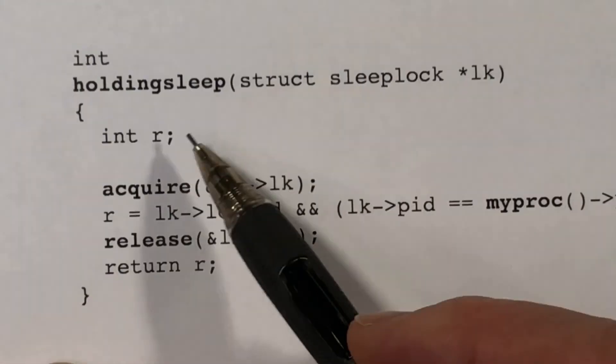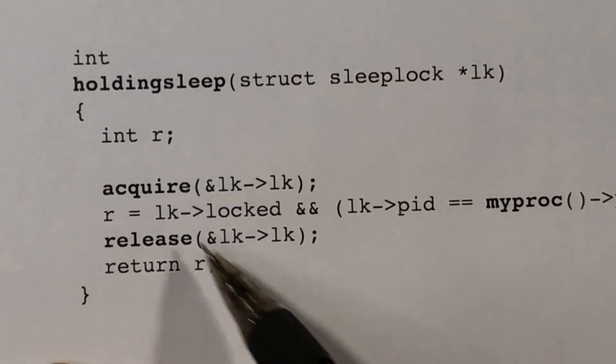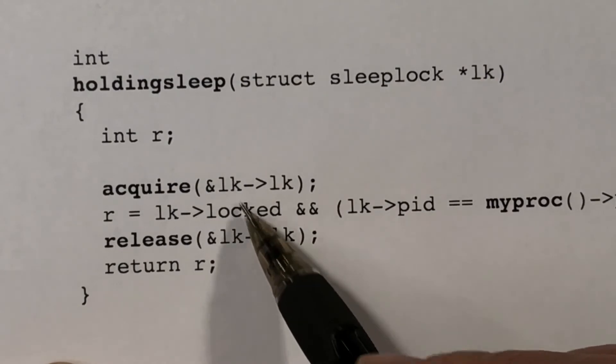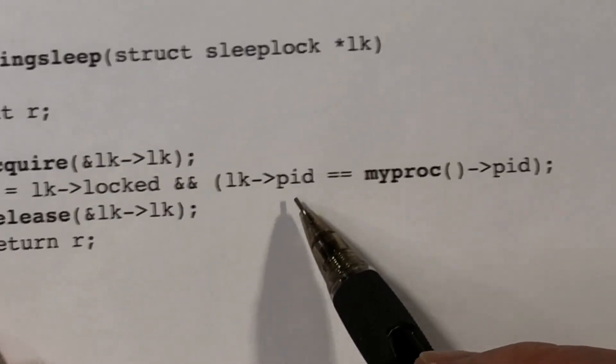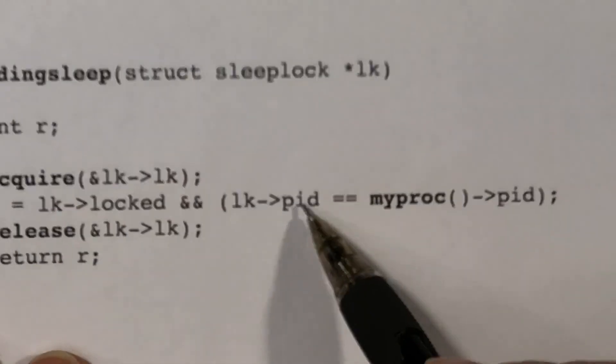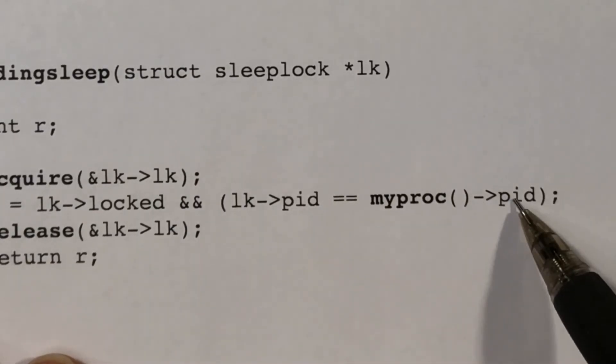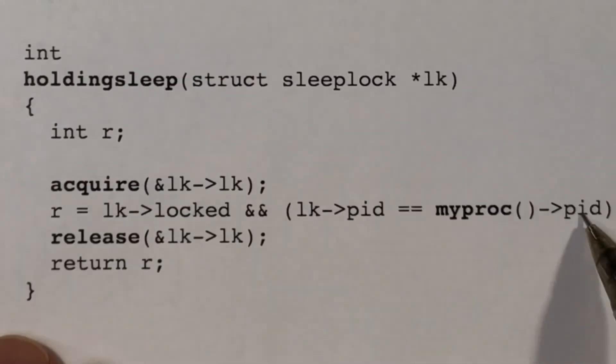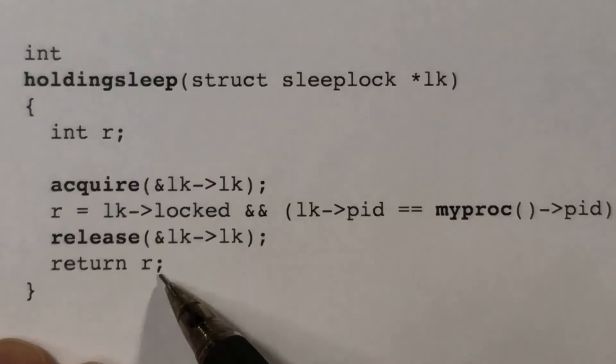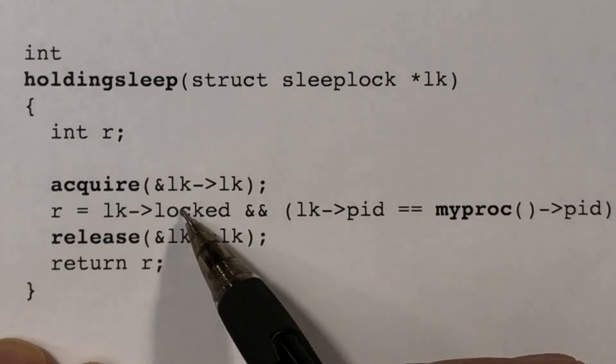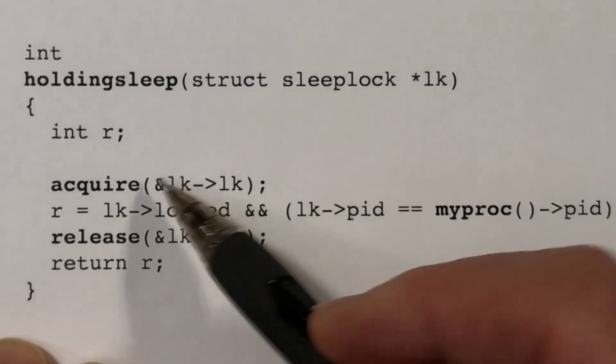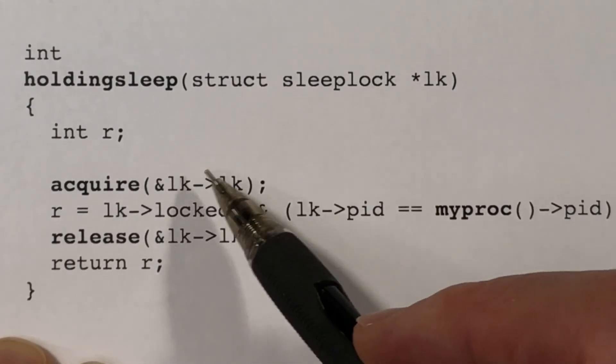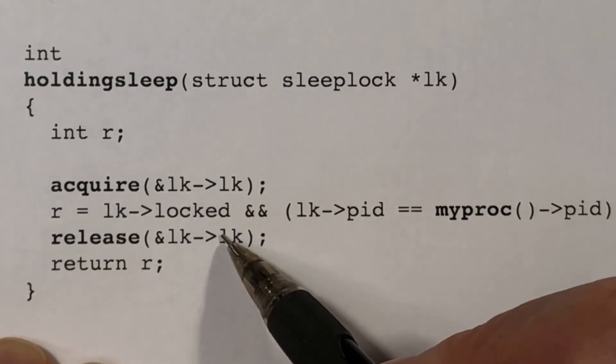The holding sleep function is pretty straightforward. We just ask whether the lock is currently held, and whether the process that is holding the lock, the process ID here, is equal to this current thread's process ID, and return that as a boolean. But of course, since we're accessing the locked and the PID field, we need to be holding the spin lock. So we acquire that, and then we release it here.